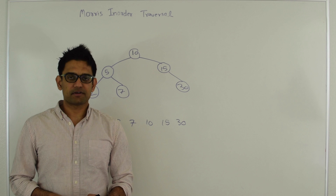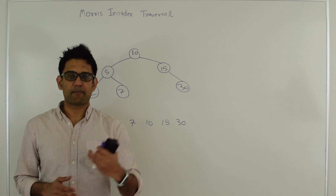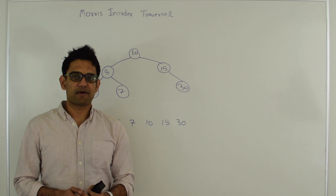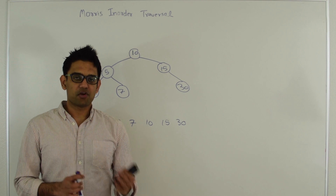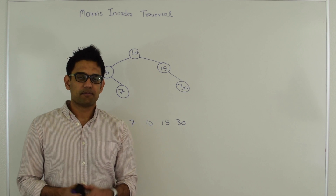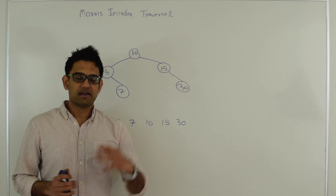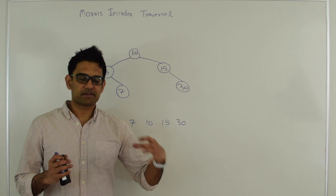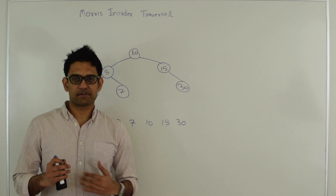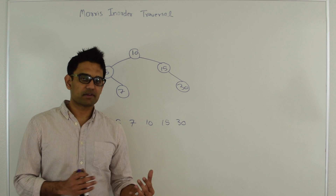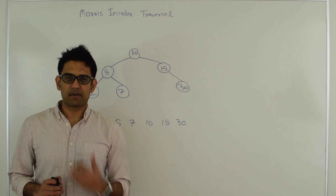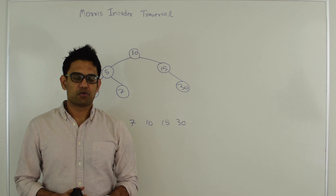Morris traversal solves this problem of going back in a very unique way. First we find the inorder predecessor of a node before going on the left subtree, connect that inorder predecessor to the node to establish a link, and then go on the left subtree. That way, since that link exists, we have a way to come back to the original node.